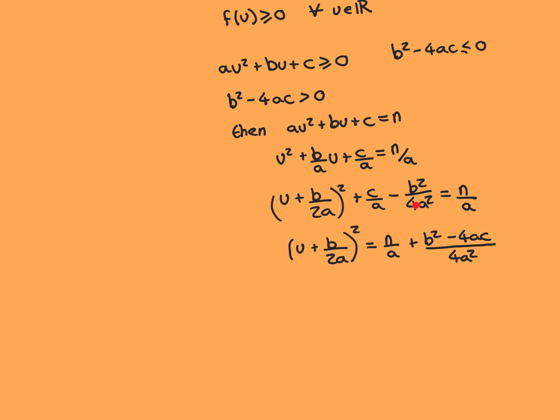Next, bring terms to the right-hand side: (u + b/2a)² = n/a − c/a + b²/4a². Getting everything over the same denominator gives (b² − 4ac) / 4a². Using our assumption that the discriminant b² − 4ac is greater than 0, the numerator is positive, a is non-zero so a² is positive, and 4 is positive. Therefore this fraction is overall greater than 0.